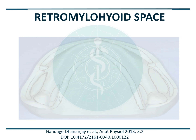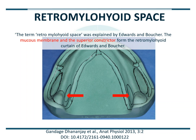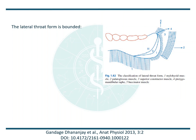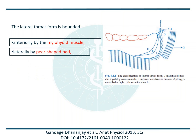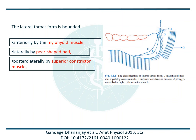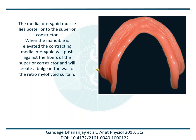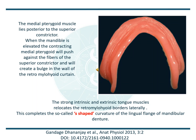Now we will talk about the retromylohyoid space, explained by Edwards and Boucher. The mucous membrane and superior constrictor form the retromylohyoid curtain of Edwards and Boucher, which influences the distolingual flange of the mandibular denture. The lateral throat form or retromylohyoid space is bounded anteriorly by the mylohyoid muscle, laterally by the pear-shaped pad, posterolaterally by the superior constrictor muscle, and posteromedially by the palatoglossus muscle. The medial pterygoid muscle lies posterior to the superior constrictor. When the mandible is elevated, the contracting medial pterygoid pushes against the fibers of the superior constrictor, creating a bulge in the wall of the retromylohyoid curtain. Together with the strong intrinsic and extrinsic tongue muscles, this relocates the retromylohyoid borders laterally, completing the S-shaped curvature of the lingual flange of the mandibular denture.